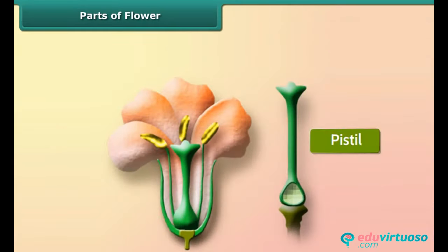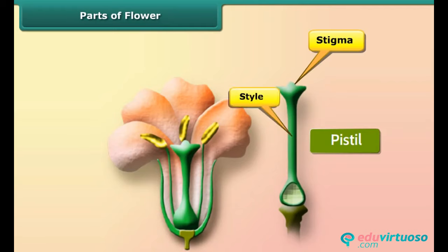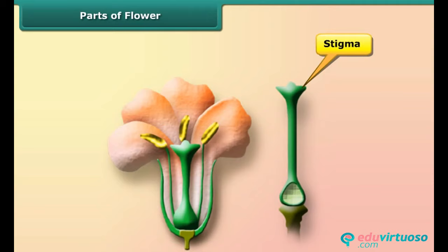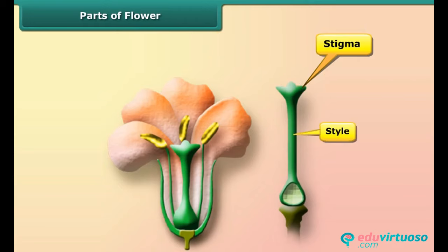The stamen has two parts: anther and filament. The anther is generally yellow in color and carries the pollen. It is held up by a thread-like part called a filament. The pistil has three parts: stigma, style, and ovary. The stigma is the sticky surface on the top of the pistil — it traps and holds the pollen. The style is the tube-like structure that holds up the stigma, and the ovary contains the ovules.